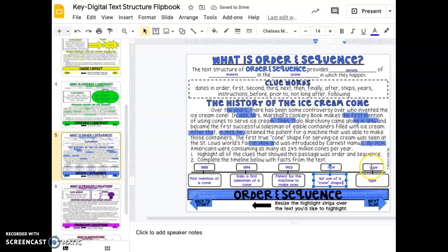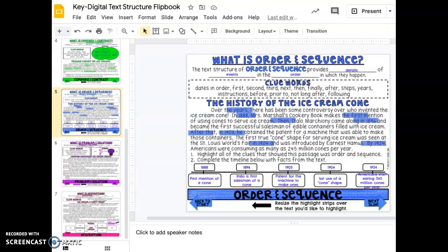The last thing that this paragraph mentions is in 1924, when Americans start eating 245 million cones per year. That's all for this. The next two text structures are going to be found on the very next video, so open up that new video and you can complete filling out your text structures flipbook with me.